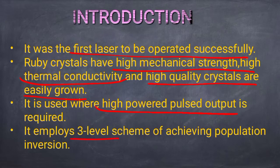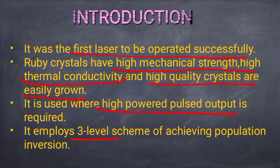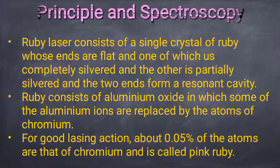A basic feature of ruby laser is that it is a three-level laser — it has three energy levels: the ground state level, the excited state level, and the metastable level which lies in the middle of these two. We will now see the principle and spectroscopy of ruby laser.